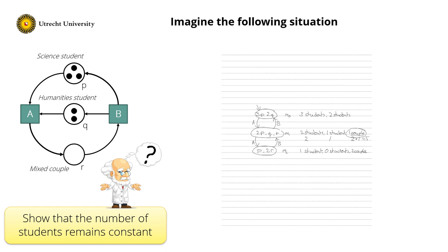Similarly for M2, I have one science token, zero humanities tokens, and two couple tokens — but each couple counts double, so one plus zero plus two times two equals five. So this is the basic idea of what we call a place invariant: we weight each place and add up the tokens according to this weight function, checking whether in any reachable marking the weighted sum equals the same constant.